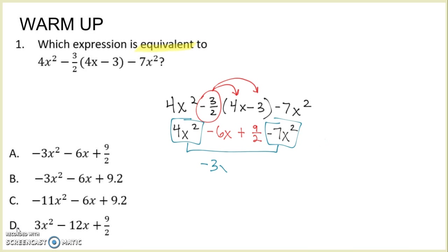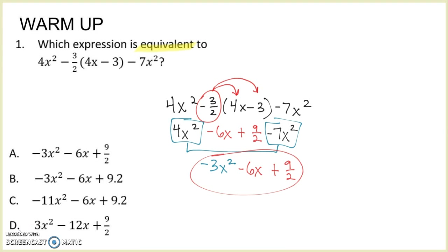So I have negative 3x squared. The negative 6x is not like any other term because it only has an x. And the 9 halves is not like any other term because it doesn't have a variable. So this is going to be my answer, and you should be able to pick answer choice A. That was number 1 in the warm-up — pretty straightforward, something you'll be expected to do on both the benchmark and the star test.